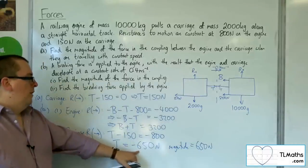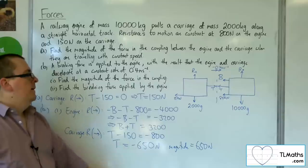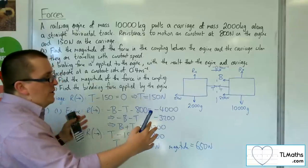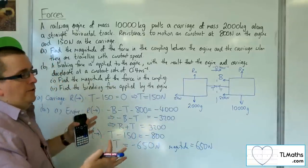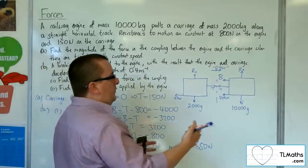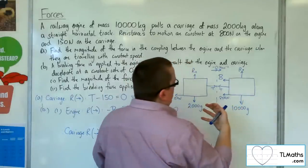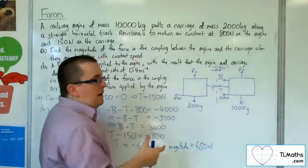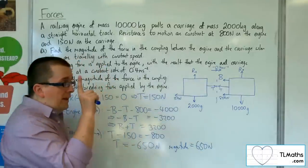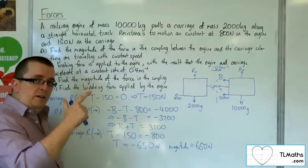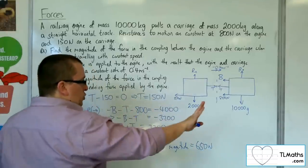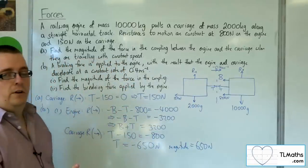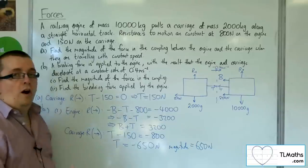The reason we get a negative tension is because the engine is decelerating. The carriage, which was initially going faster, is now pushing against the engine. It's not that the engine is pulling the carriage along anymore - the carriage is pushing into the engine. The tow bar coupling has gone from tension into a thrust, a compression, trying to push the carriage and engine back apart. That's why tension comes up negative - it's working in the opposite direction.